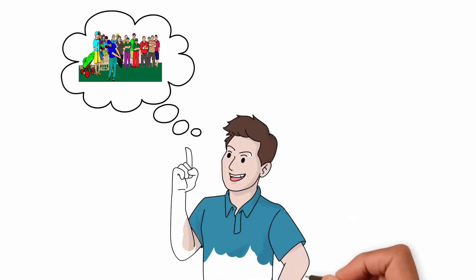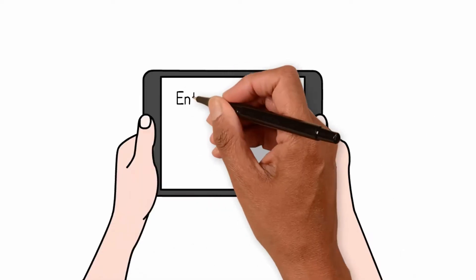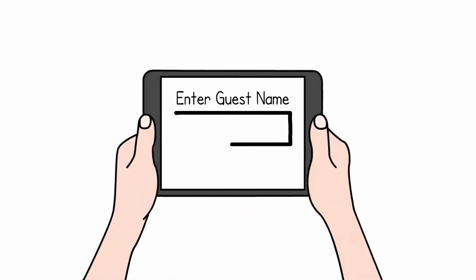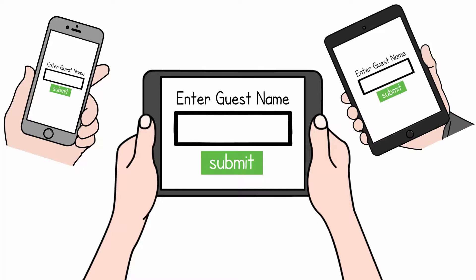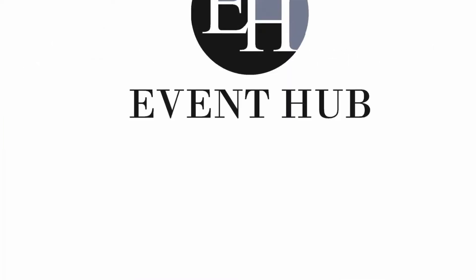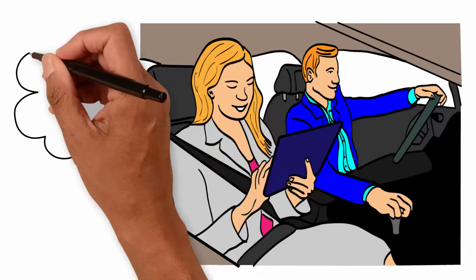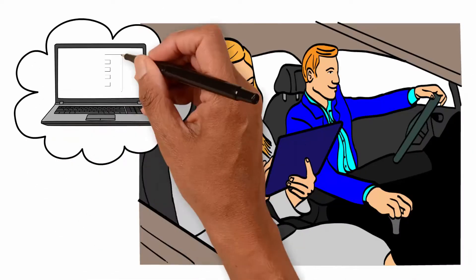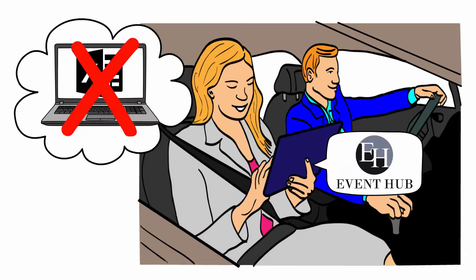What if there is a system that saves you a huge amount of time while making your life easier? A system that allows you, an event organizer, the ability to enter guest names from any device while doing the heavy lifting for you. Introducing Event Hub — this great software program allows event organizers to break away from stressful spreadsheets and have the freedom to enter guest names from any device while on the go.